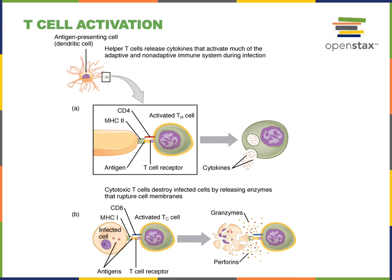Helper T cells are T lymphocytes that express the CD4 positive form of the T cell receptor complex and are activated by antigen displayed in the MHC2 protein by professional antigen presenting cells such as dendritic cells, macrophages, monocytes, neutrophils, or B lymphocytes that have engulfed a pathogen by phagocytosis and then broken down that pathogen. The fragments from the pathogen are displayed on the surface of the professional antigen presenting cell using an MHC2 protein.